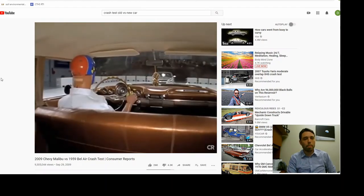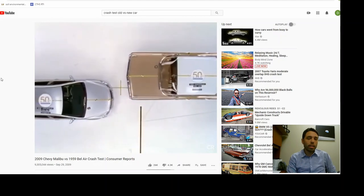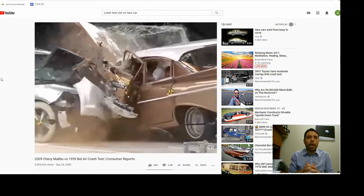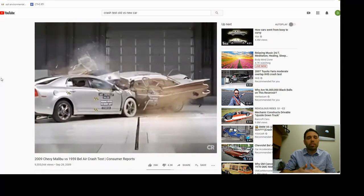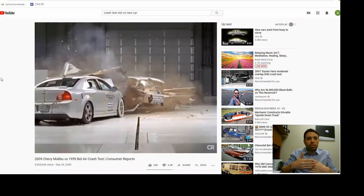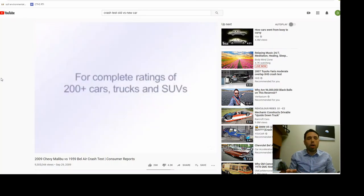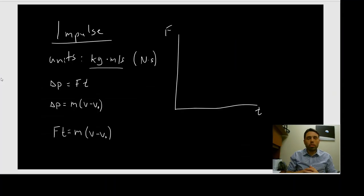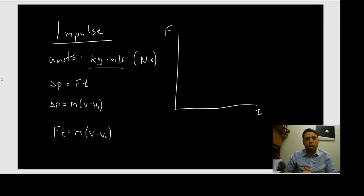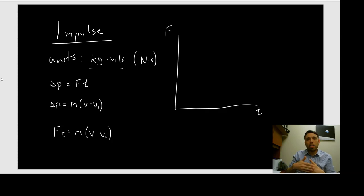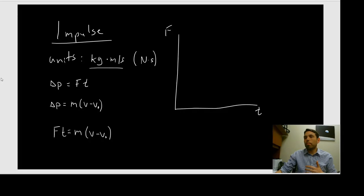I want to talk about crumple zones as well. The modern car is designed to crumple a certain way upon impact — it folds up like an accordion. Instead, the Bel Air just shatters. You'll notice that all the debris in that video is from the Bel Air. The Malibu has crumple zones — it's designed to fold up like an accordion upon impact.